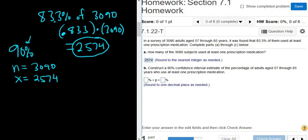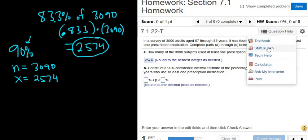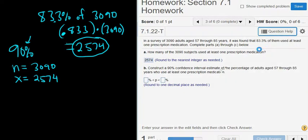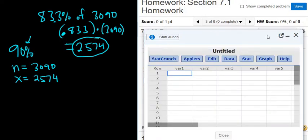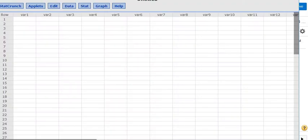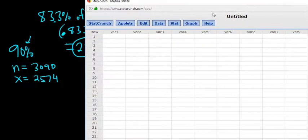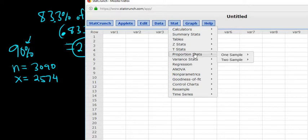So now all we do is go to StatCrunch. So you click on where it says Question Help, and you click on StatCrunch. I'm going to detach this so it's easier to see. Then we go to Stat, Proportion Stats, One Sample with Summary.